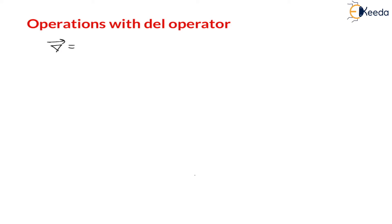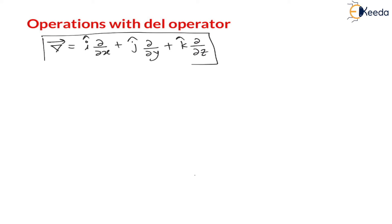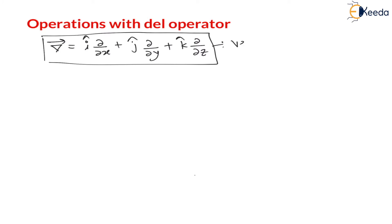In the previous lecture we have seen the del operator. The del operator is a vector operator given as: i-cap dou by dou x plus j-cap dou by dou y plus k-cap dou by dou z. It is called the del operator or also the vector operator. It is not a vector, it is just a vector operator.